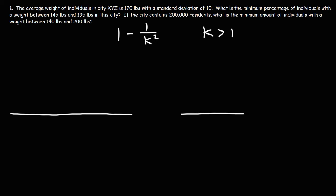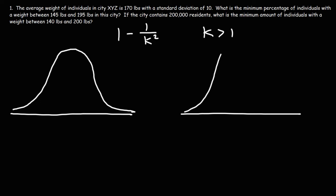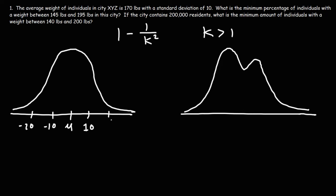Let's analyze two different distributions. On the left, we have a normal distribution, and on the right, an unusual distribution. Chebyshev's theorem works for any type of distribution — it's an inequality. It gives you the minimum proportion of data that is within k standard deviations of the mean, so it doesn't give you the exact answer, but it gives you a range. This is the mean, this is one standard deviation, two standard deviations, and three standard deviations from the mean.